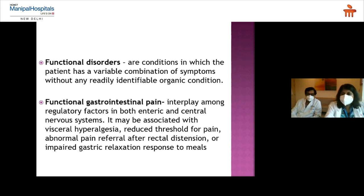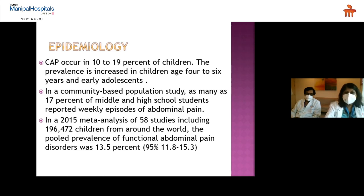Functional disorders involve a variable combination of symptoms and signs without an identified organic condition, usually due to the interplay of regulatory factors in the enteric and central nervous systems. Factors like visceral hyperalgesia, reduced pain threshold, abnormal pain reprise after rectal distension, or impaired gastric relaxation may be involved. Epidemiologically, chronic abdominal pain occurs in up to 10–20% of children aged four to six years, and 17% of middle and high school children report weekly abdominal pain episodes.